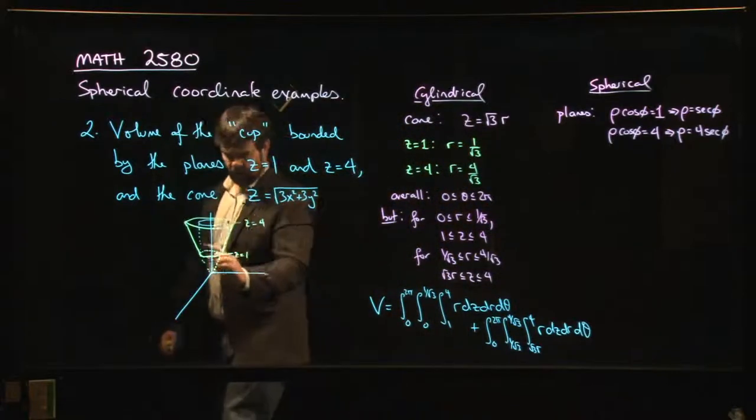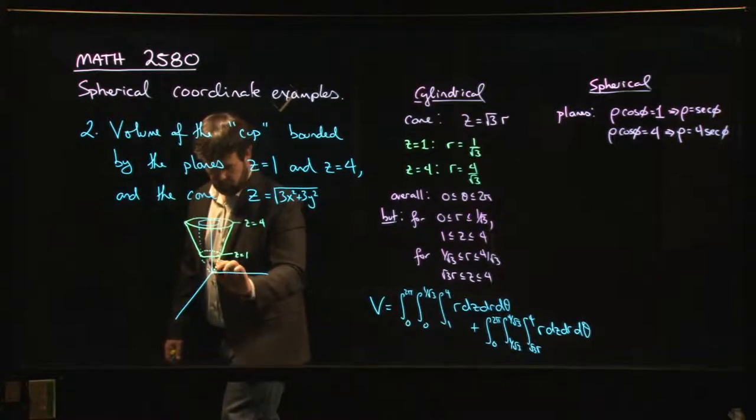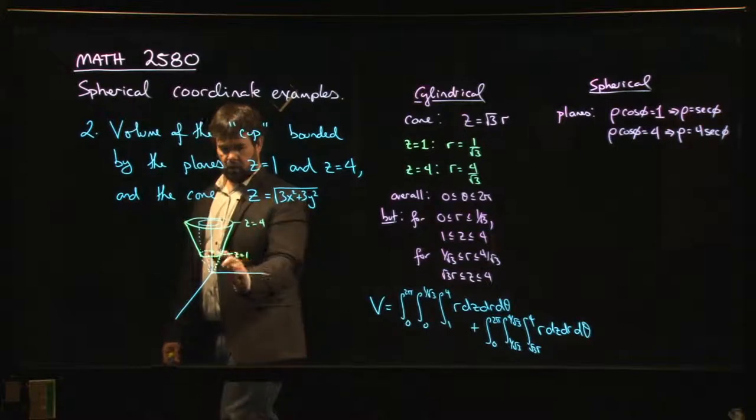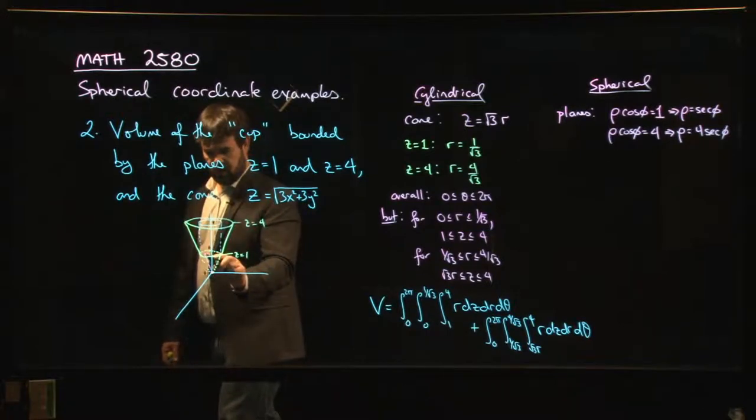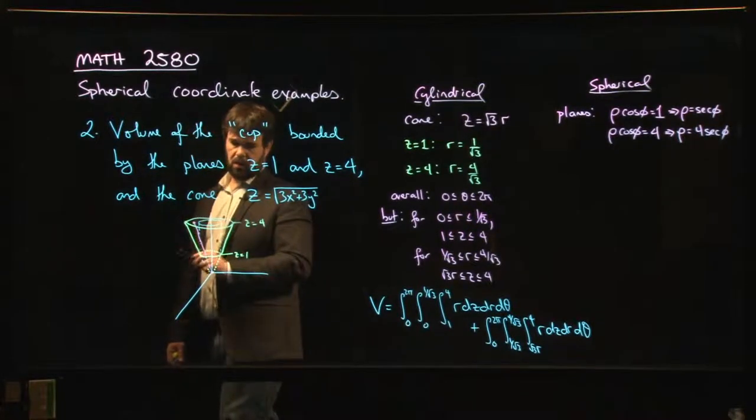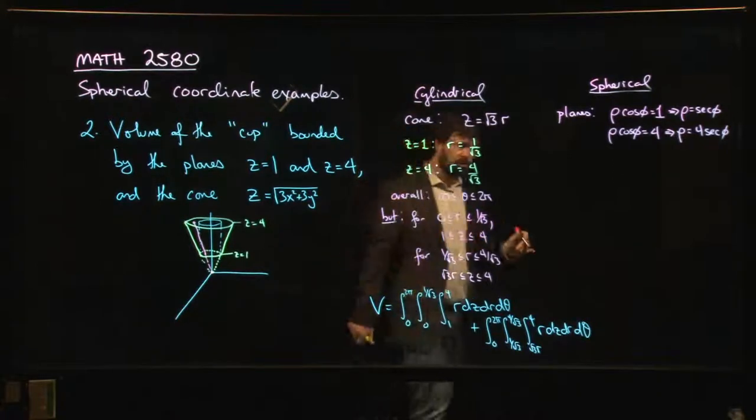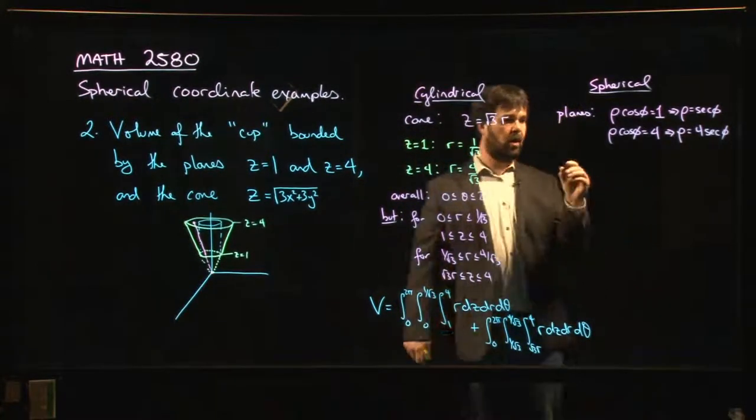We enter here when rho is equal to secant phi, and we exit when rho is equal to four secant phi. So that's not so bad. What about the cone?